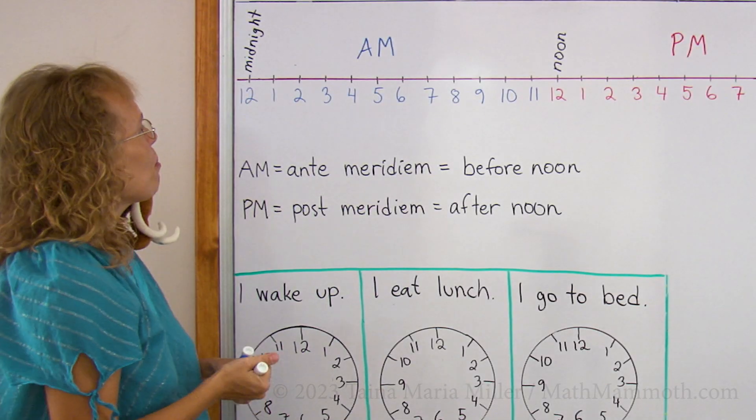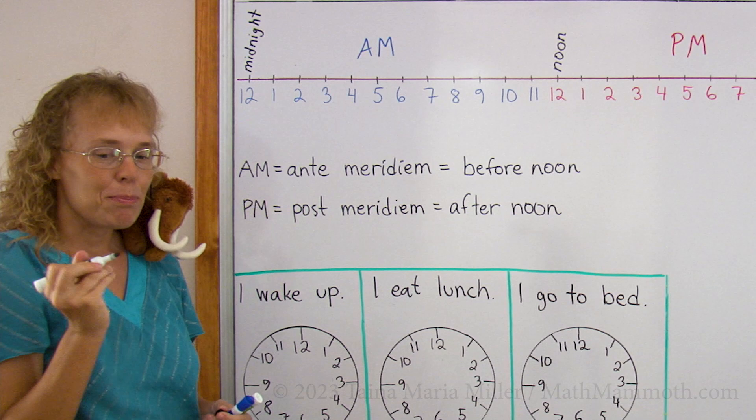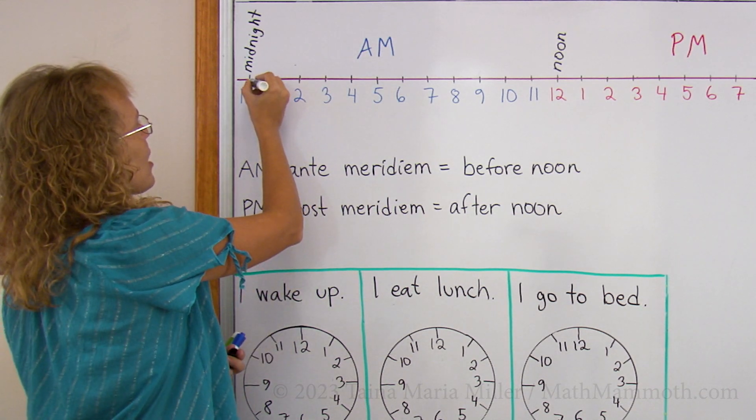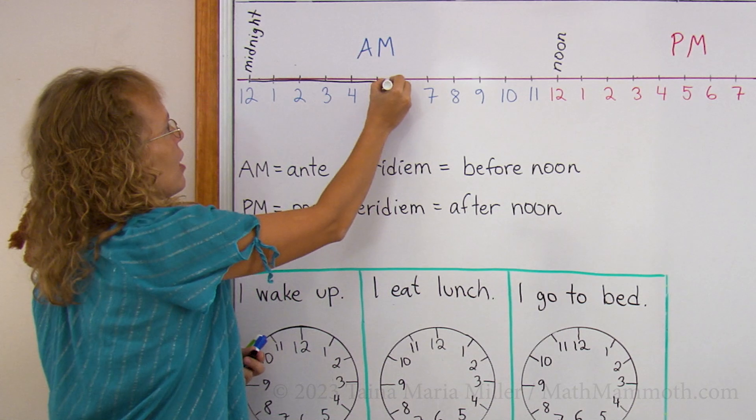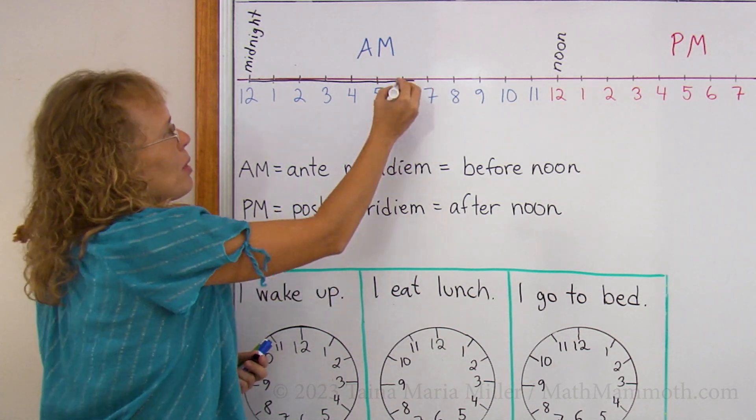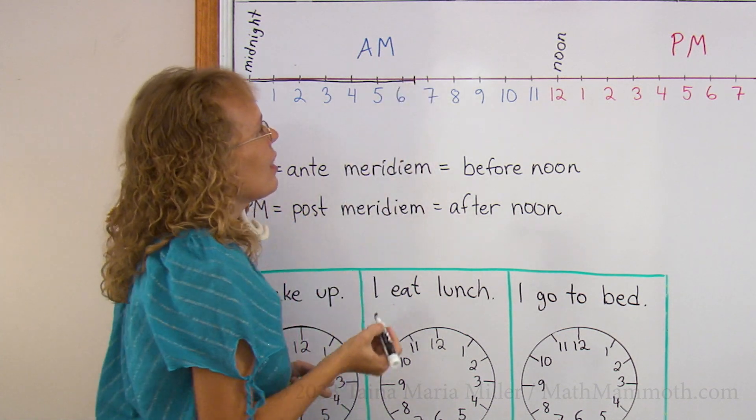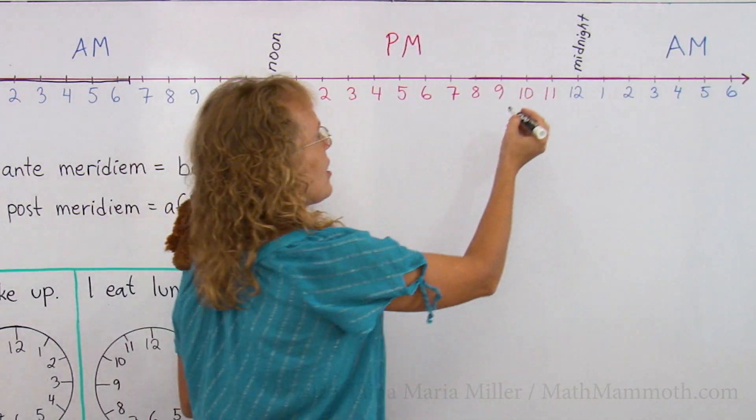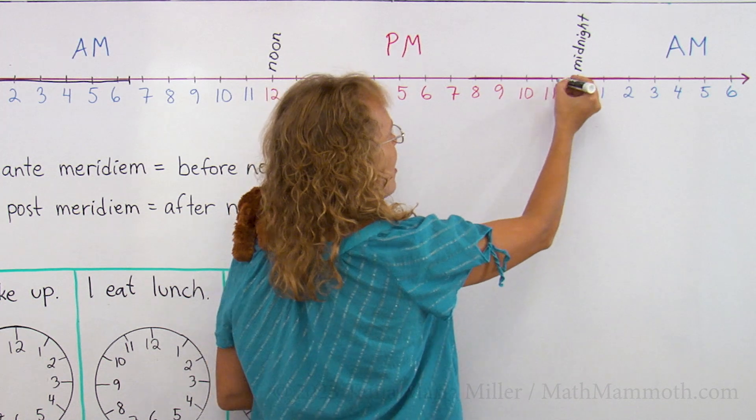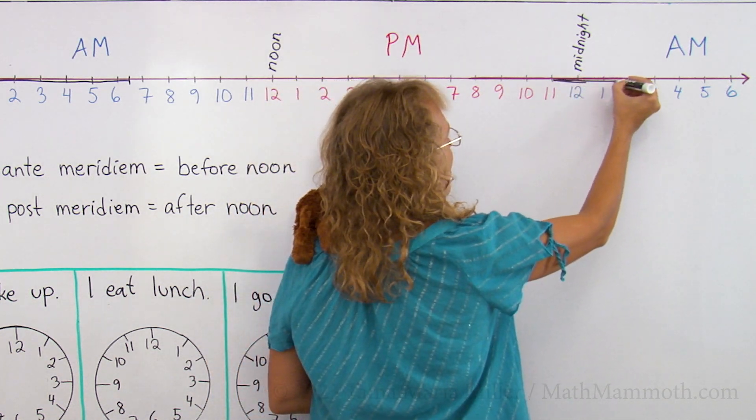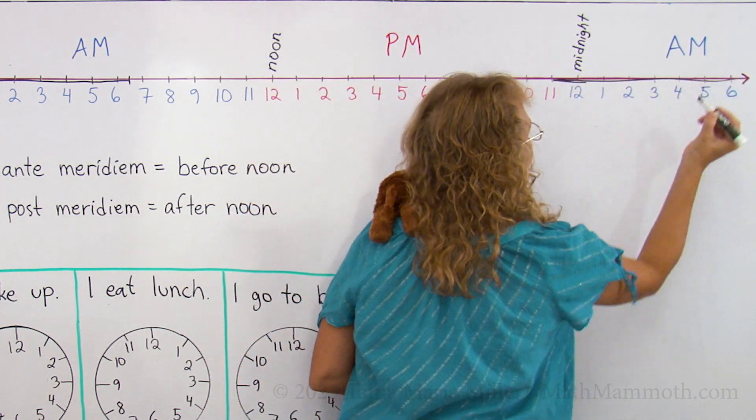Now, I will mark here my sleeping hours. I typically sleep all through these hours till maybe 6:30. Sometimes I sleep till 7 or later. And then when I go to bed, it's somewhere here, maybe 10:30 or 11. So I'm sleeping those hours.